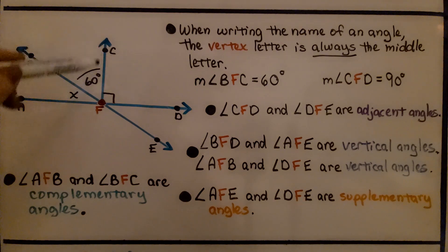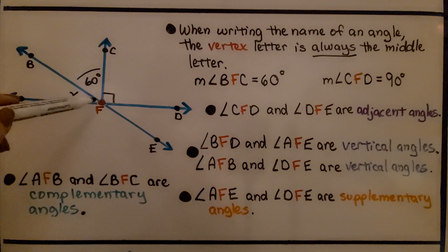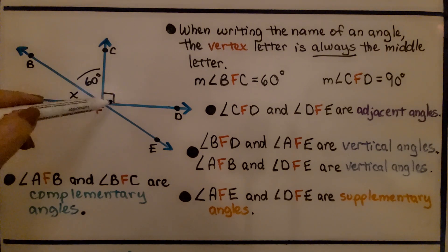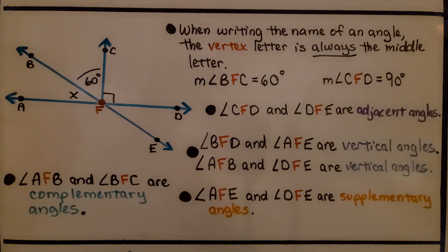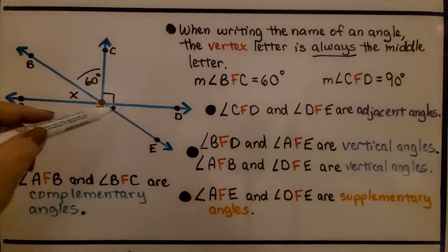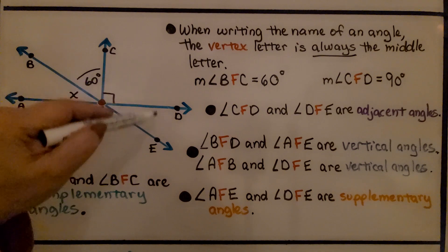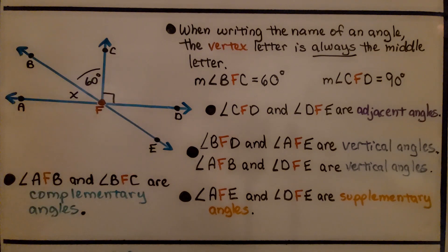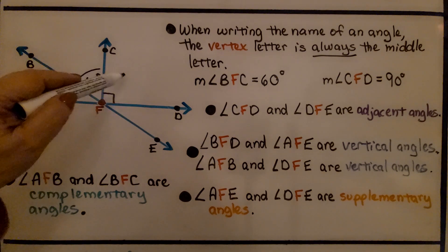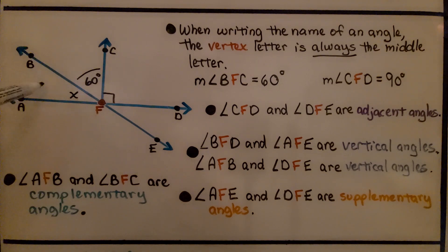The measure of angle CFD is 90 degrees — we can see the box indicating a right angle. Angle CFD and angle DFE are adjacent angles; they're next to each other and share the vertex F. There are actually many adjacent angle pairs in this diagram.